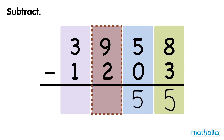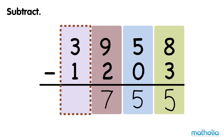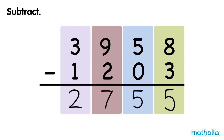Subtract the hundreds. 9 hundreds minus 2 hundreds equals 7 hundreds. Subtract the thousands. 3 thousands minus 1,000 equals 2 thousands. 3,958 minus 1,203 equals 2,755.